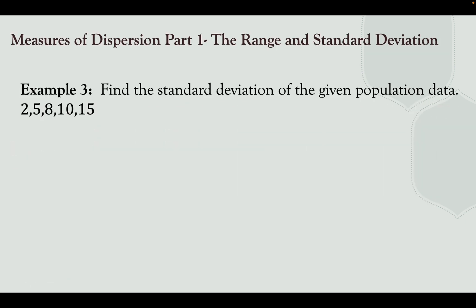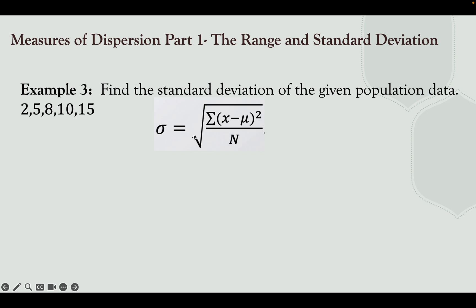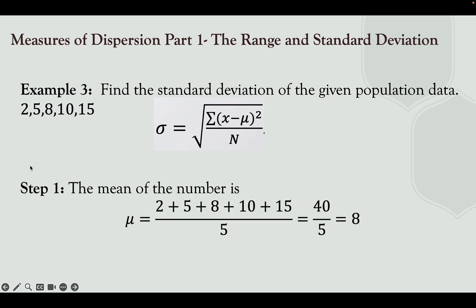Let's try example number 3. Find the standard deviation of the given population data: 2, 5, 8, 10, and 15. Since it is population data, we use the population Standard Deviation formula: σ equals the square root of the summation of squared deviations over n. Step 1: find the mean.